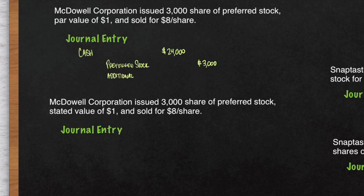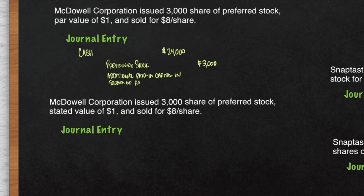Your last credit is to additional paid-in capital in excess of par value preferred stock. This will be $21,000 — it's the difference between what you receive in cash and what you recorded for preferred stock. So additional paid-in capital, preferred stock of $21,000.